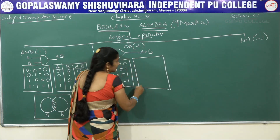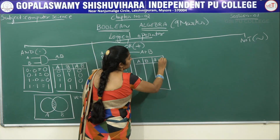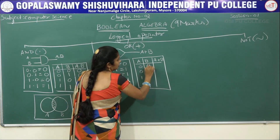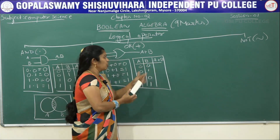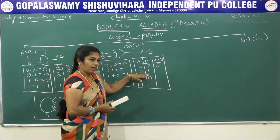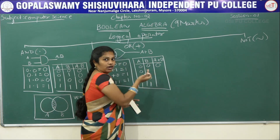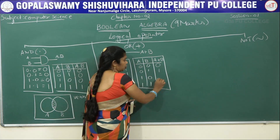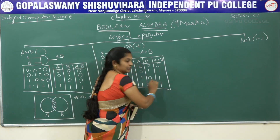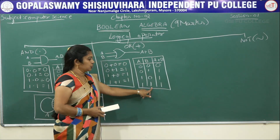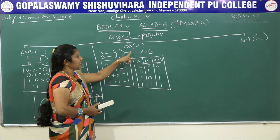The truth table for OR uses two variables A and B, with output A plus B. Inputs: 0,0 → output 0 (both false, so output is false); 0,1 → output 1; 1,0 → output 1; 1,1 → output 1. If any one of the inputs is true, then only the output becomes true; otherwise it is false.